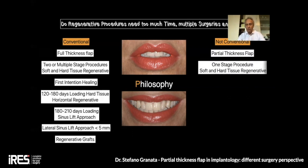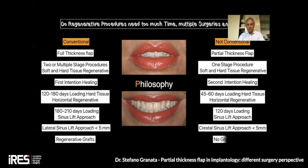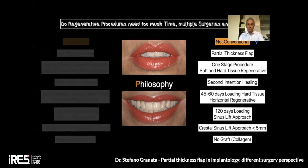What is my non-conventional surgery? I use the partial thickness flap. Most of my surgeries are one-stage procedures for both soft and hard tissues. I choose second intention healing rather than first intention. We wait only 60 days before loading in horizontal regenerative cases, and not more than 120 days for sinus lift. I approach crestal sinus lift within less than five millimeters. I use only collagen as a graft. This is the philosophy I would like to share with you today.